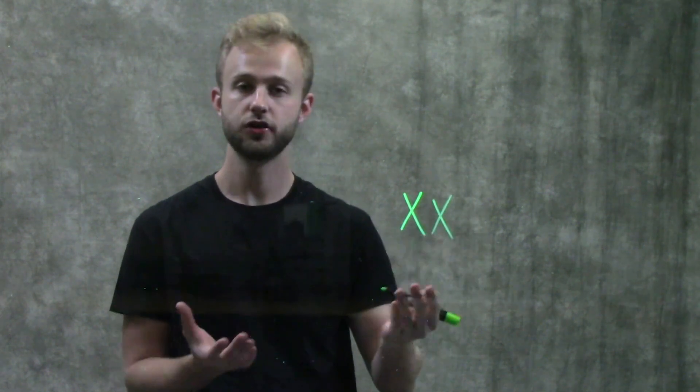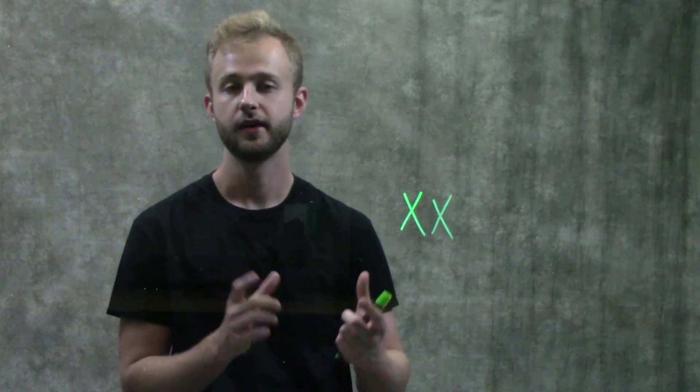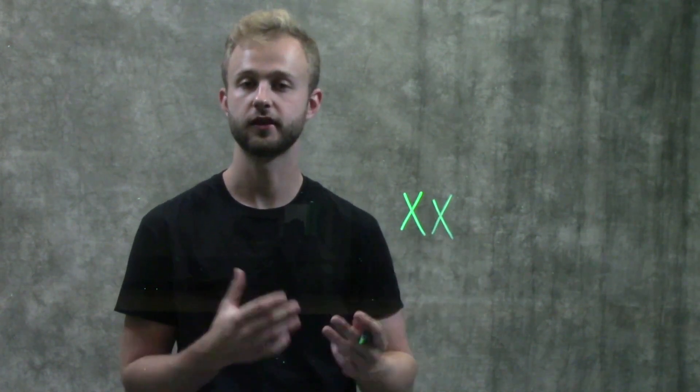So we know that women are always going to have two X chromosomes. And so because they have two X chromosomes, that means they have two copies of every gene on that chromosome. And so any locus on these chromosomes is going to behave like normal.